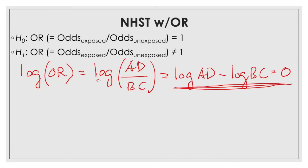Basically, we're testing the difference — when these two quantities are the same, the difference becomes 0 and the ratio becomes 1. So this is in the same form as a t-test.